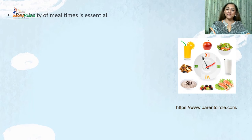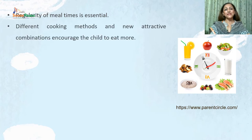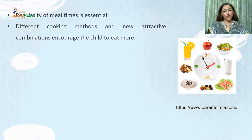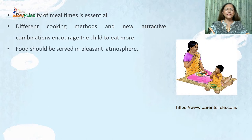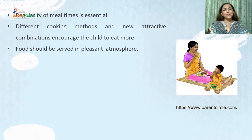Regularity of meal timings is very essential as it leads to development of good eating habits among preschoolers. Different cooking methods and new attractive combinations encourage the child to eat more. The child should never be crying while taking food. The atmosphere should be pleasant, peaceful, and free of any distraction—TV, computers, and gadgets should be turned off during mealtime so the child can enjoy the meal.